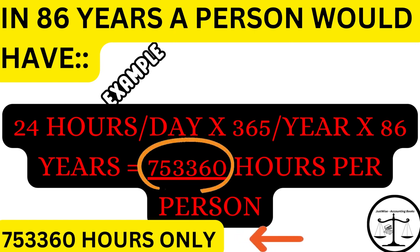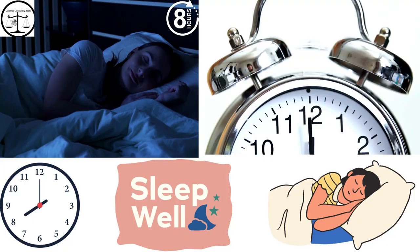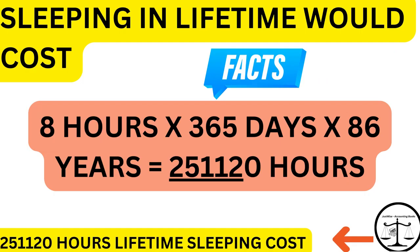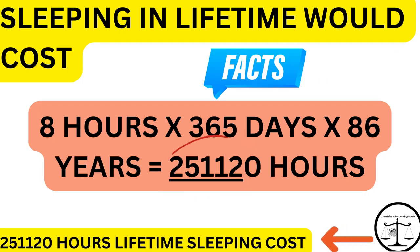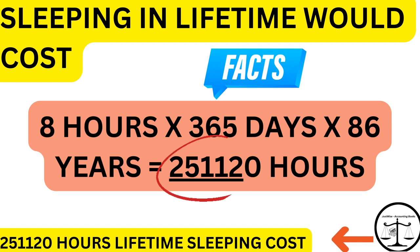Assuming a person sleeps about 8 hours a day, this will cost a person about 8 hours per day multiplied by 365 days per year multiplied by 86 years, which gives us 251,120 hours per person.